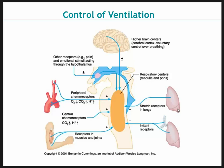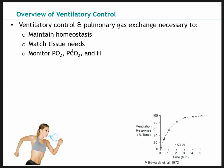We have stretch receptors in our lungs, irritant receptors, higher brain centers, the cerebral cortex, the motor cortex, and some other respiratory input. We'll go over each one of these, but let's first start with an overview of ventilatory control.